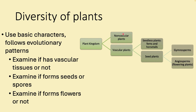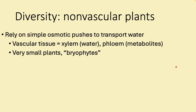Non-vascular plants are relatively simple and use osmosis to move water through. They lack vascular tissue. In plants, vascular tissues are xylem, which moves water, and phloem, which moves metabolites like sap and syrups. Non-vascular plants are collectively called bryophytes — the suffix 'phyte' means plant.